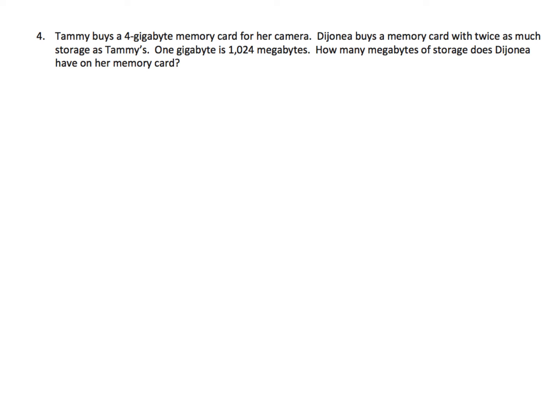One last word problem. I chose this because it's a really nice opportunity to draw a picture. So we've got Tammy. She buys a 4 gigabyte memory card. And Dijonia buys a memory card with twice as much storage as Tammy. So we have Tammy, and I'm going to put a T, and then we have Dijonia with a D. Now, I'm going to give them both the exact same size tape diagram. Now, we know that Tammy buys a 4 gigabyte, so I'm going to label that with a 4. Now, Dijonia buys a memory card with twice as much, which means she's going to have another tape, and these are each 4s.